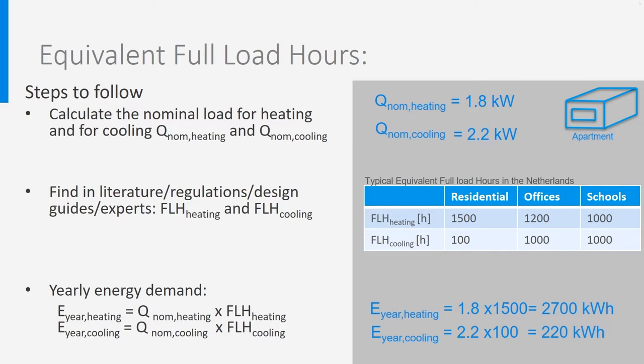The second step is to look in the literature, norms, or guides for estimations of the full load hours. For instance, in the Netherlands for a residential building, the full load hours for heating are around 1500, while there are only 100 for cooling. The last step is to multiply the nominal power by the full load hours, which gives an annual energy demand for space heating of 2700 kilowatt-hours, and for the cooling it is 220 kilowatt-hours.